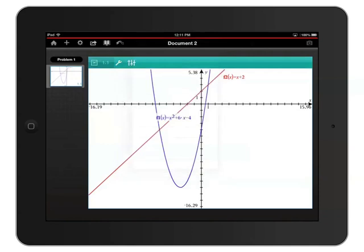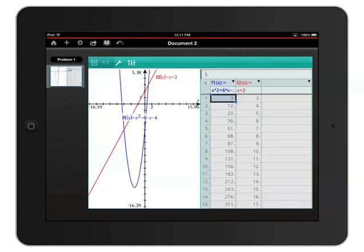Now I can see my graph on the left and a table of values on the right. Each column in the table shows one of my two functions, so I can see that when x equals 2, f1 of x is 12, and f2 of x is 4.